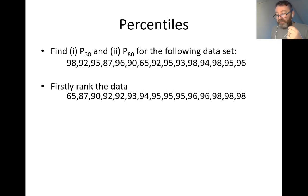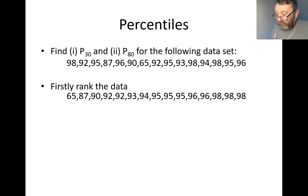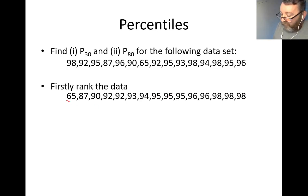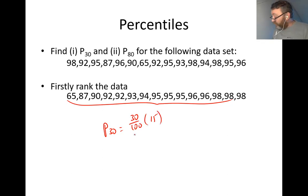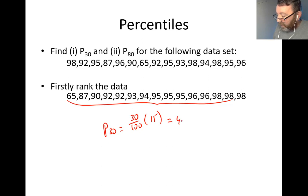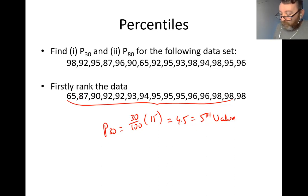Now I want P30. First, how many data points are in this collection? Counting gives us 15 data points. P30 is 30% of 15, which is 0.3 × 15 = 4.5. Because this gives a decimal, I take the next value — the fifth value. So the fifth value in the ranked data is the mark of the 30th percentile.